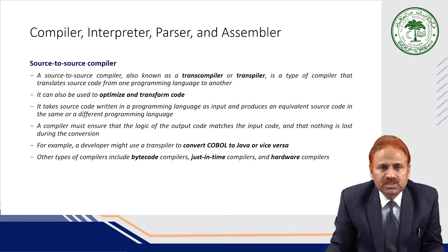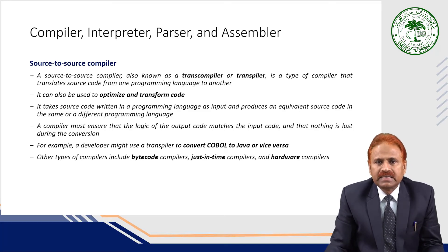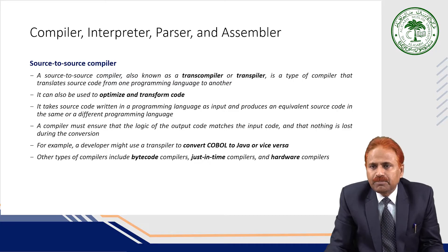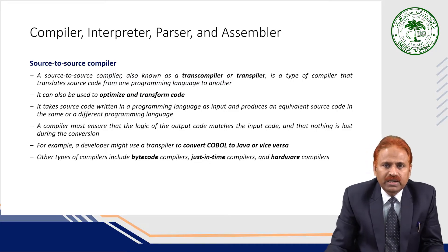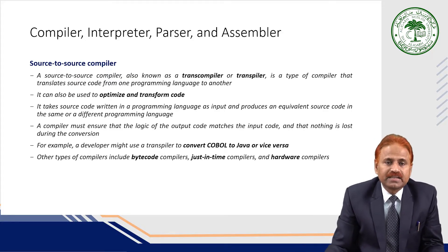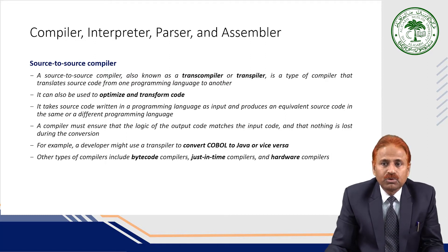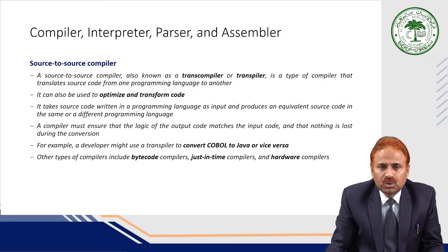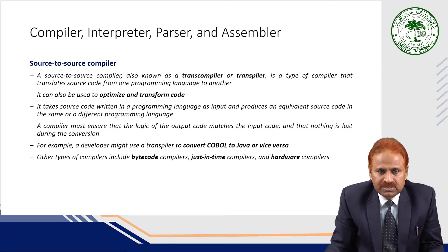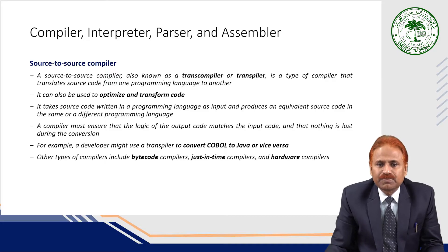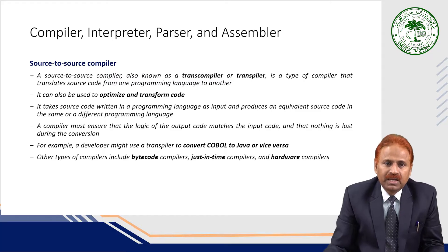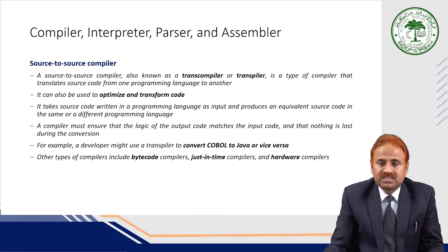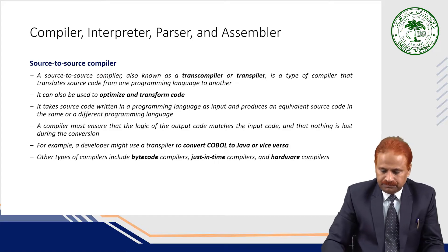Next is the source-to-source compiler, also known as a transcompiler or transpiler. It is a type of compiler that translates source code from one programming language to another. It can also optimize and transform code. It takes source code in one programming language and produces equivalent source code in the same or a different language. A compiler must ensure the logic of the output matches the input. For example, a developer might use a transpiler to convert COBOL to Java. Other types include bytecode compilers, just-in-time compilers, and hardware compilers.